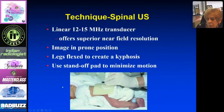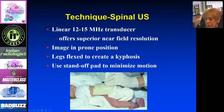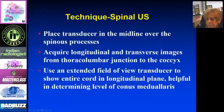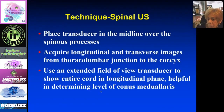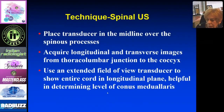You put the patient prone, flex the legs a little bit, creating a kyphosis with a small blanket or pillow, then use a standoff pad to minimize motion. Place the transducer in the midline and obtain longitudinal and transverse scans, scanning routinely from the thoracolumbar junction to the coccyx. Use a linear transducer, and if available, use an extended field of view so you can show the entire cord, which allows you to count vertebral bodies and determine the level of the conus.